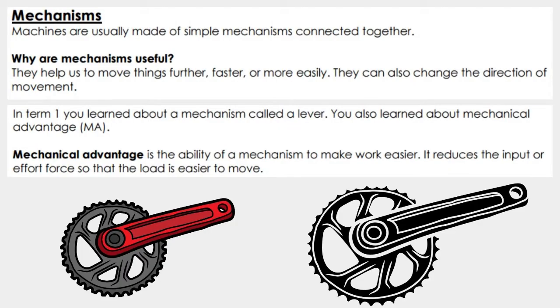Mechanisms: Machines are usually made of simple mechanisms connected together. Why are mechanisms useful? They help us to move things further, faster, or more easily. They can also change the direction of movement.